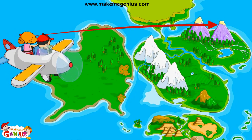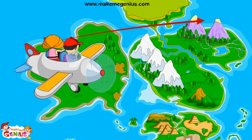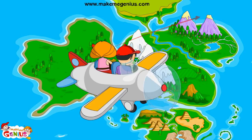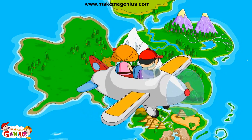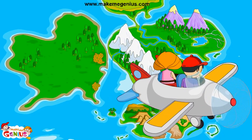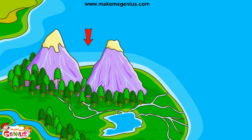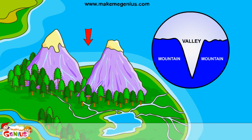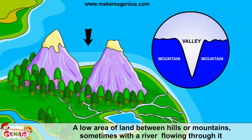Can you see the low area between two mountains? What is the name of this landform? This is known as a valley. It is a low land area between two mountains.